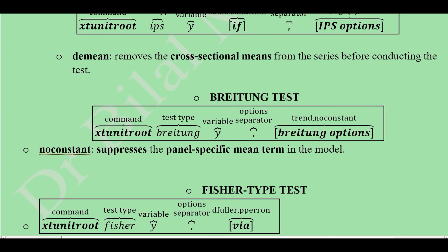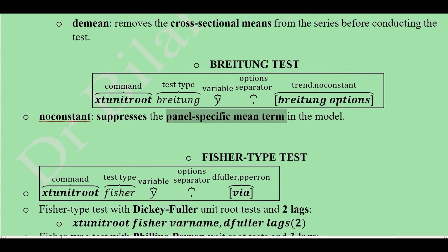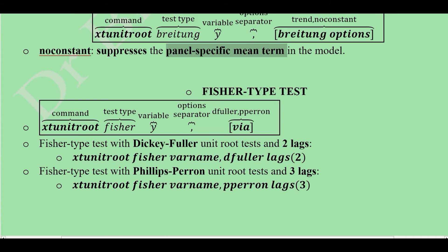The third test is the Breitung test. Most of the command syntax remains the same — we specify 'breitung' as the test type. The Breitung-specific options include trend, which is familiar, and 'noconstant', which is slightly new. The noconstant option suppresses the constant, which is the panel-specific mean term, so we can exclude it if desired.